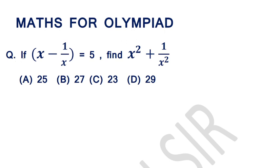And the question is, if x minus 1 over x is equal to 5, find x square plus 1 over x square. And the options are 25, 27, 23, and 29.